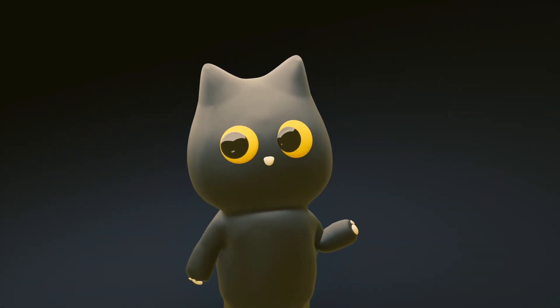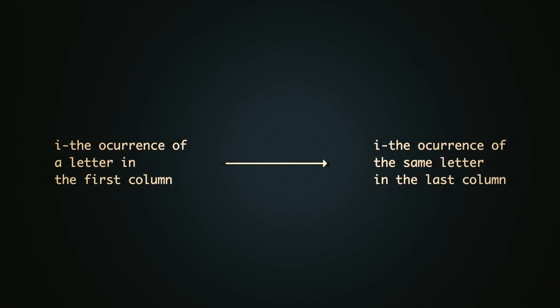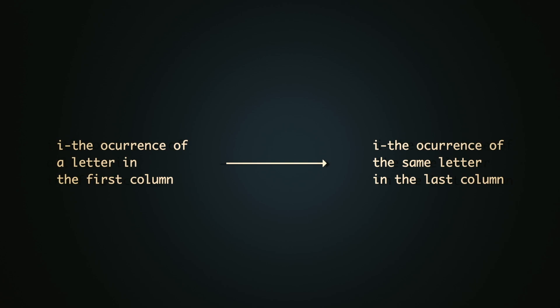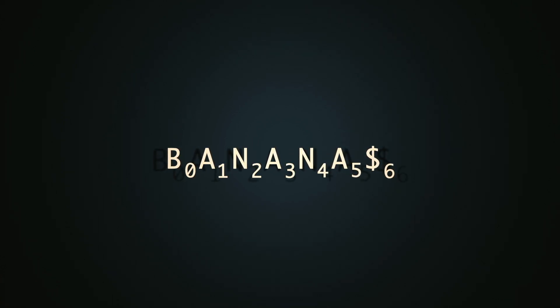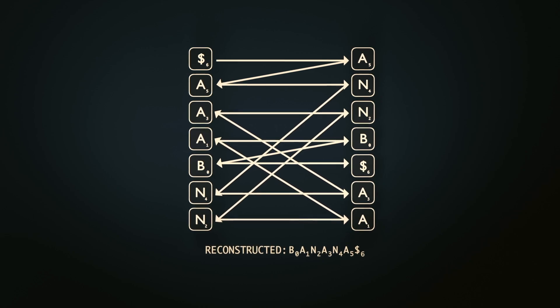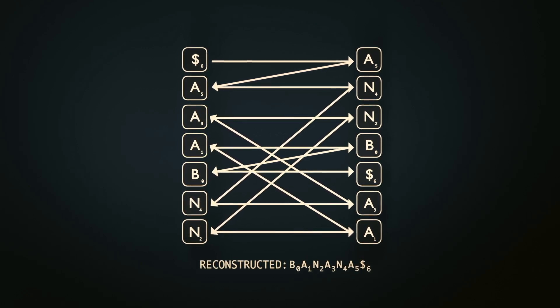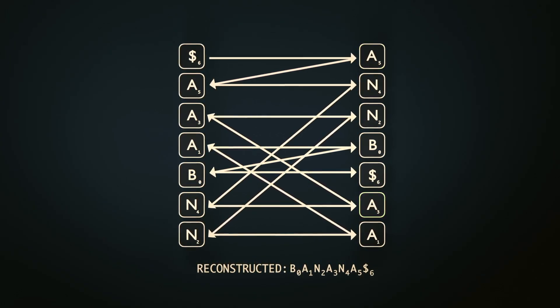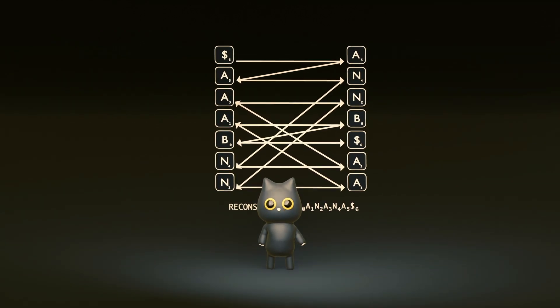How does this work? It relies on the last-first mapping theorem, also known as LF mapping. It states that the i-th occurrence of a letter in the first column corresponds to the i-th occurrence of the same letter in the last column. To demonstrate that this is indeed the case, we show the indices of the characters in the original string, and in the first and last columns of the grid that we produced. We can see that in the first column, the indices of A are 5, 3, and 1. In the last column, it is also 5, 3, and 1. The order of appearance of each letter in the first and last column are thus indeed in correspondence.